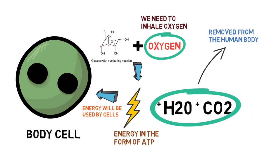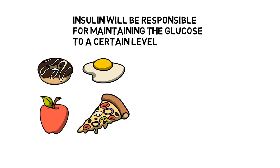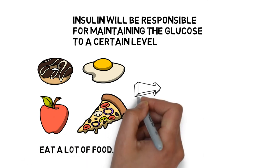Several hormones, such as insulin, are responsible for maintaining glucose at a certain level. Sometimes we may consume more food than required for our body cells.